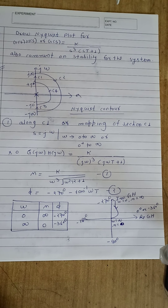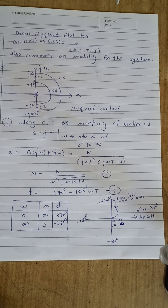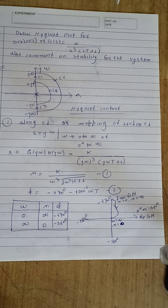So we have the Nyquist contour. According to the diagram, the horizontal axis defines sigma and the vertical axis defines j-omega. We can divide the Nyquist path into four sections: section C1, section C2, section C3, and section C4. To draw the Nyquist plot, we will map each section from the s-plane to the GH-plane.